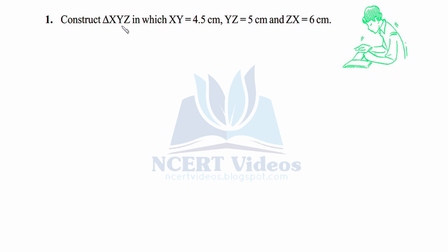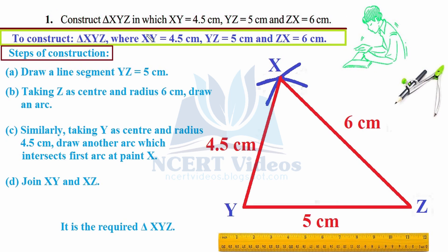Question 1: Construct triangle XYZ in which XY equals 4.5 cm, YZ equals 5 cm, and ZX equals 6 cm. In this question we are given the three sides of a triangle. Our aim is to construct triangle XYZ where XY equals 4.5 cm, YZ equals 5 cm, and ZX equals 6 cm. If three sides are given, then the construction is very easy.